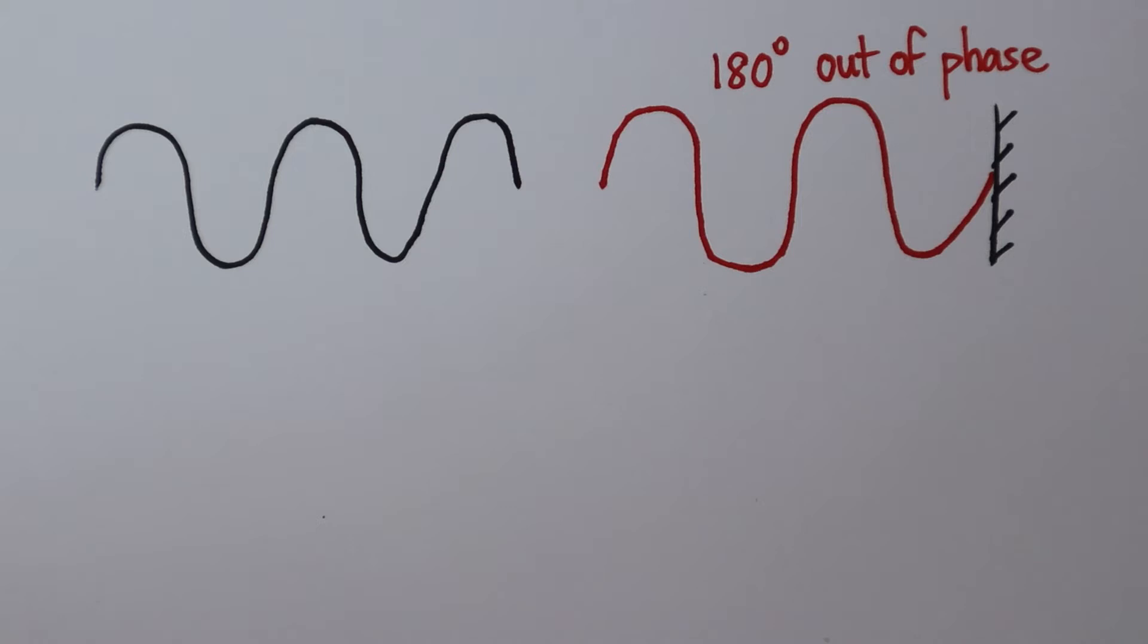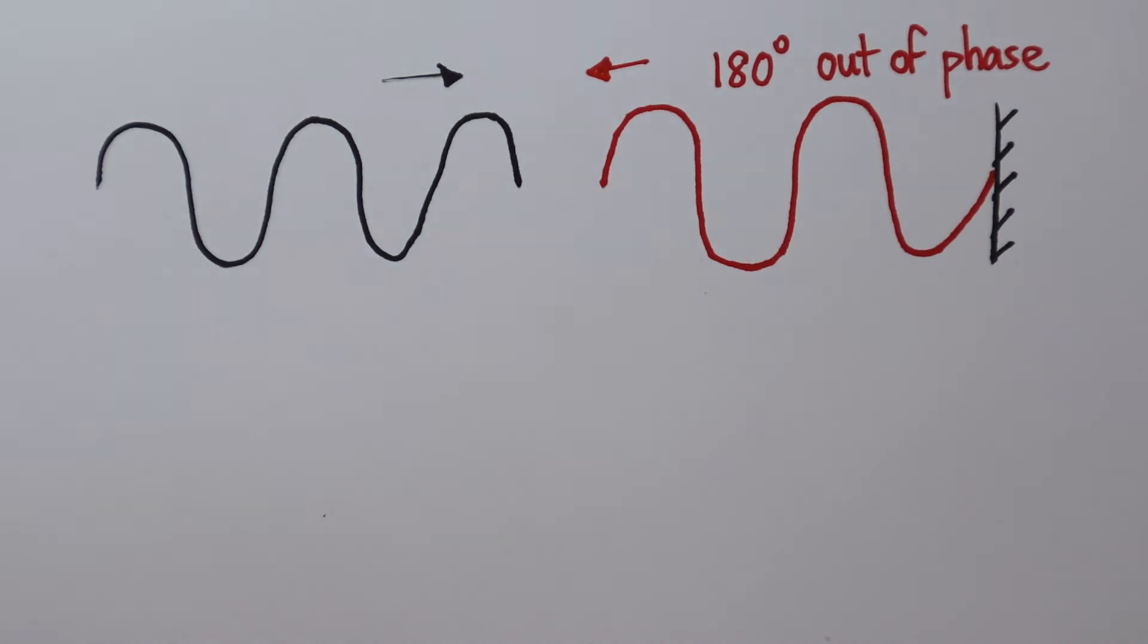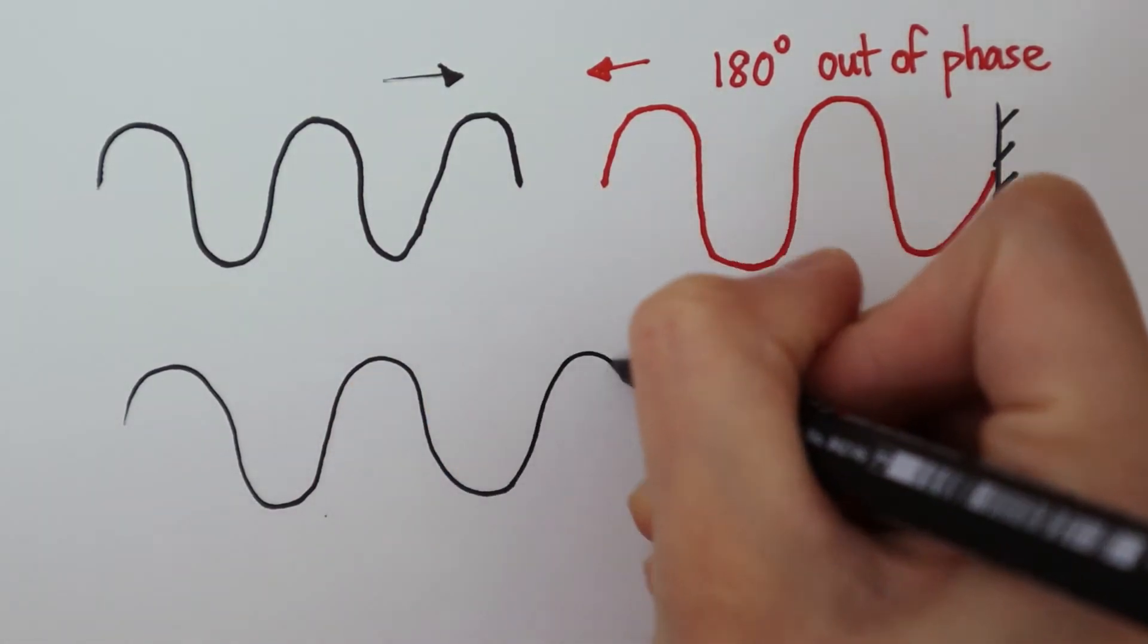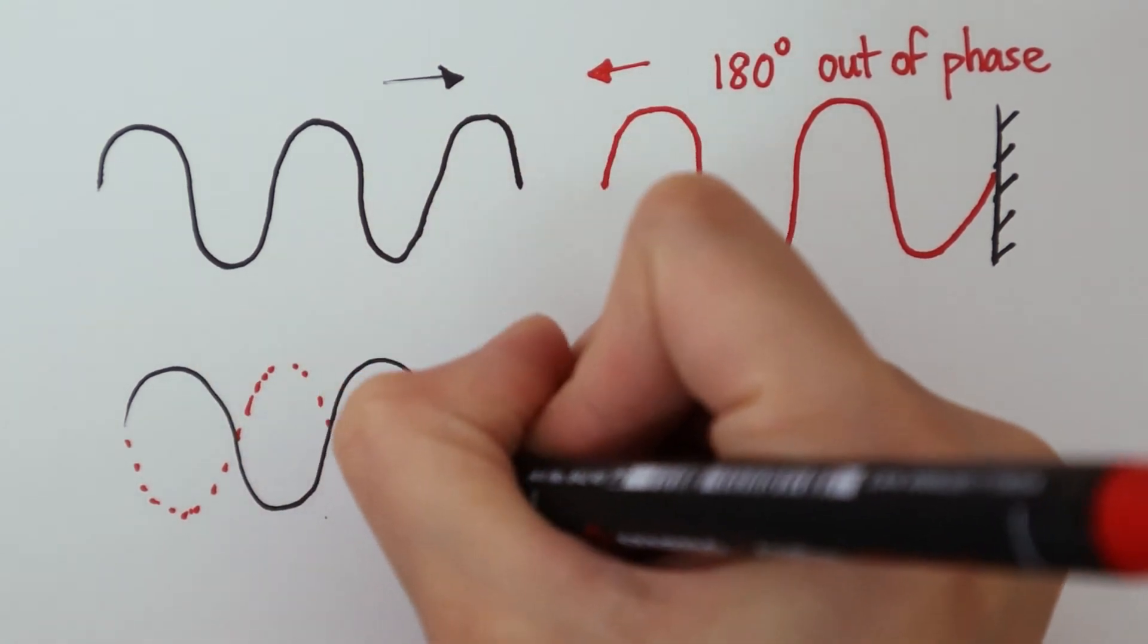What we now have are two waves that have the same amplitude and wavelength. They are traveling in the opposite direction, and they interfere. When the two waves overlap, they produce an interference pattern that does not travel through space.